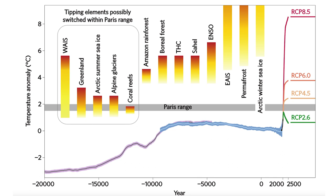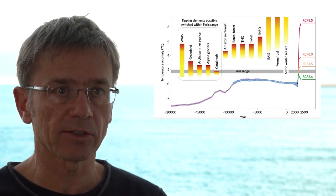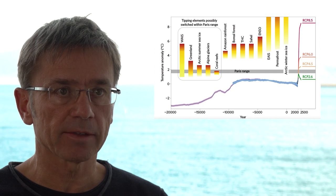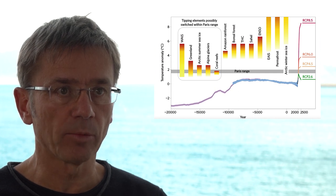You see fairly stable temperatures during the Holocene, and at the very end you see an uptick of warming by about one degree that has been caused by human activities, by our greenhouse gas emissions that have increased the amount of carbon dioxide and other gases in the atmosphere to the point of trapping enough heat to stop the long-term slow cooling trend related to ice age cycles and bring us on a trajectory of rapid warming.